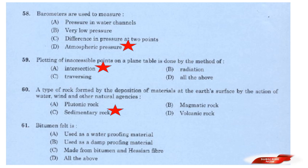Question: Bitumen felt is? Options: Used as a waterproofing material; Used as a damp proofing material; Made from bitumen and hessian fiber; All the above. Answer: Option D — All the above.